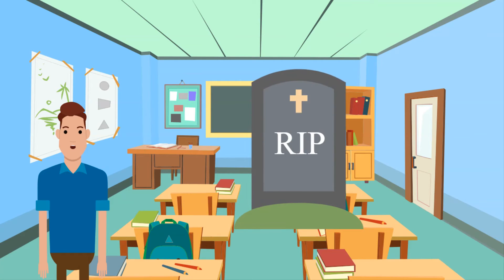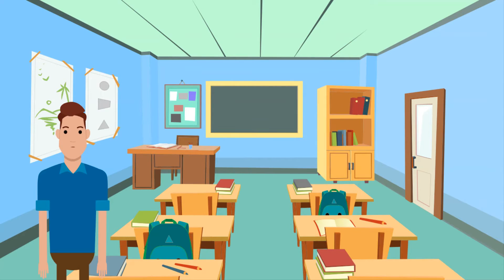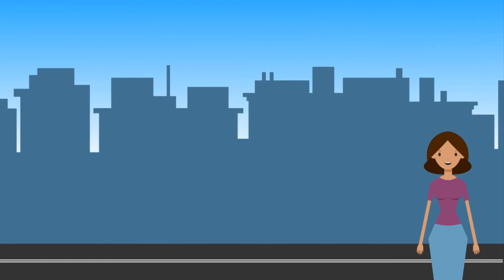Death rates increase where there is a larger proportion of older people. Poor diet, housing conditions and health care can increase the death rate. Constant pregnancies can increase the death rate among women. In more economically developed countries, modern living can increase the risk of death from cancer, heart disease and traffic accidents.